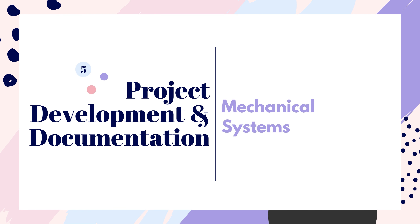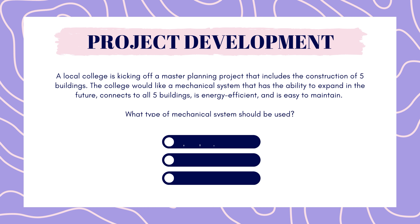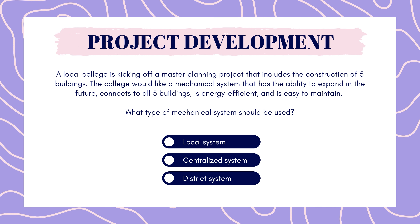Now on to project development. A local college is kicking off a master planning project that includes the construction of five buildings. The college would like a mechanical system that has the ability to expand in the future, connects to all five buildings, is energy efficient, and is easy to maintain. What type of mechanical system should be used? Local system, centralized system, or district system?